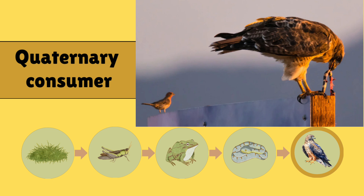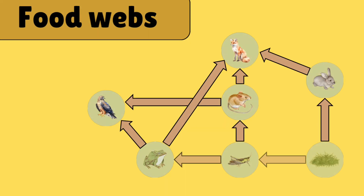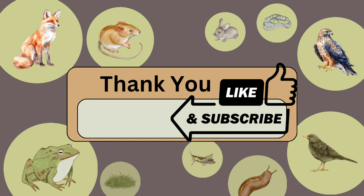Now let's see the food web. A food web is made up of multiple food chains and shows how they interact. Thank you. Please like, subscribe, share, and comment on Plus 2 Biology.